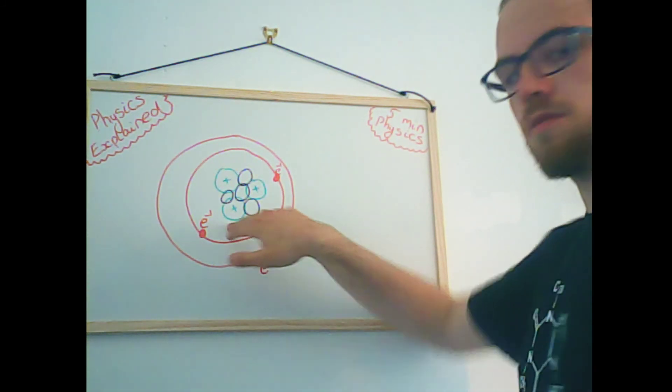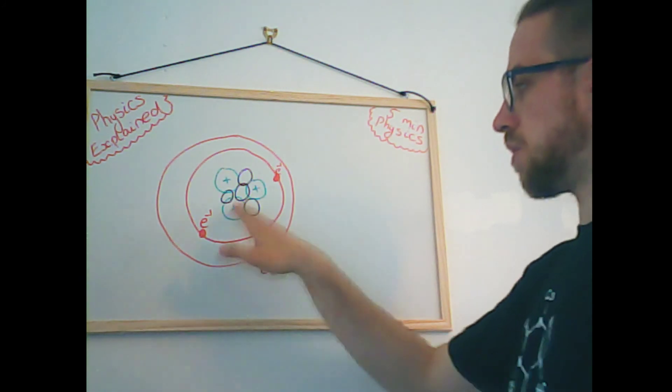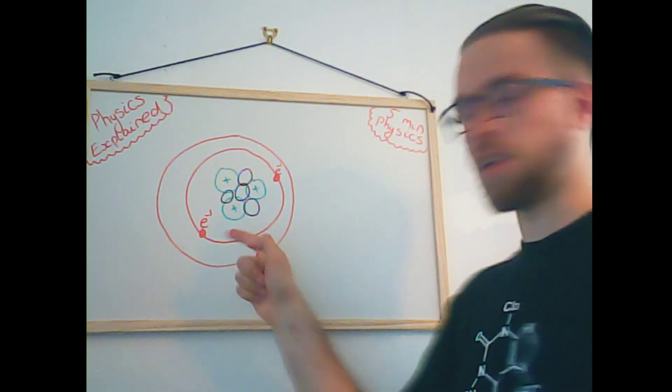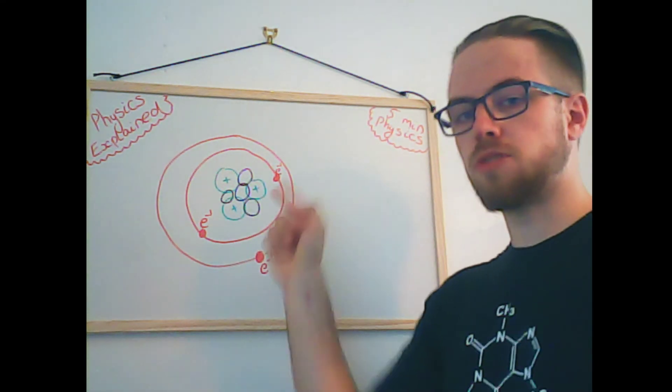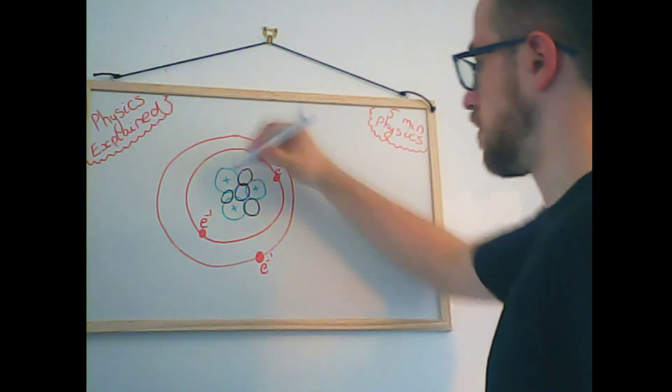And then in energy levels outside in concentric circles around the nucleus we have electrons. The inner shell has the lowest energy because there is some attractive force between the positive protons and the negative electrons that's bringing them in. But these electrons are also moving around really quickly, so there is also an external force outwards.